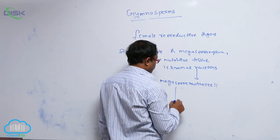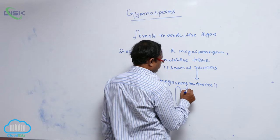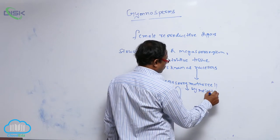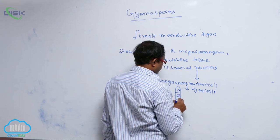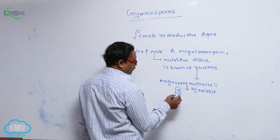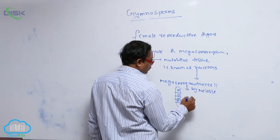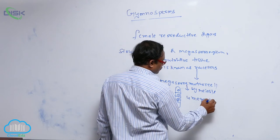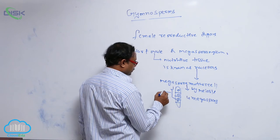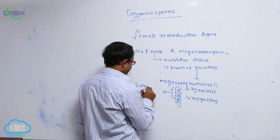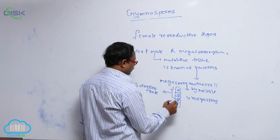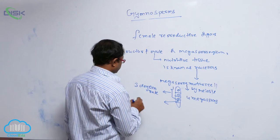The megaspore mother cell undergoes meiotic division to produce four haploid spores — four megaspores are formed. Of these four megaspores, three degenerate, meaning they are destroyed. Only the remaining one is functional.